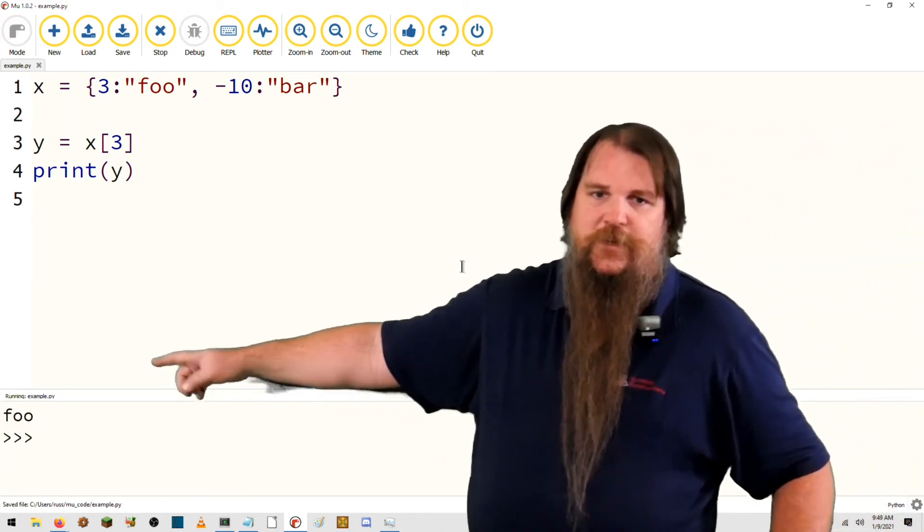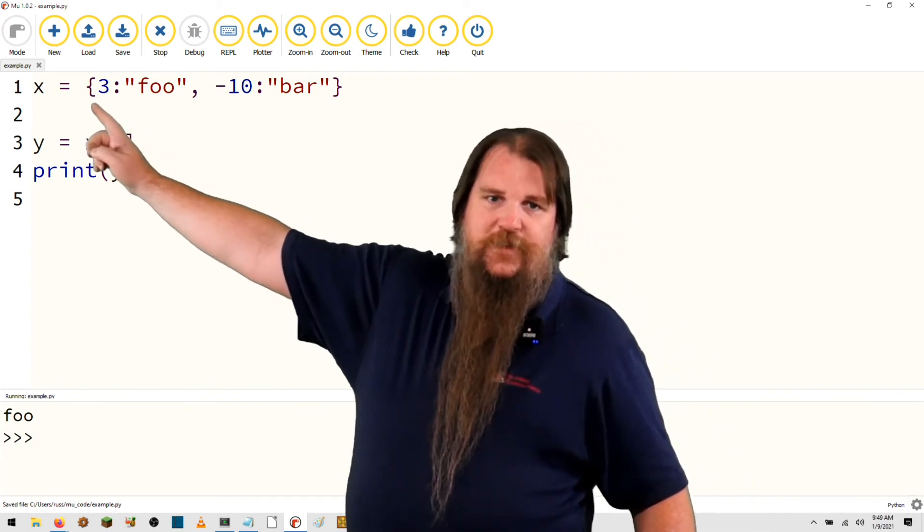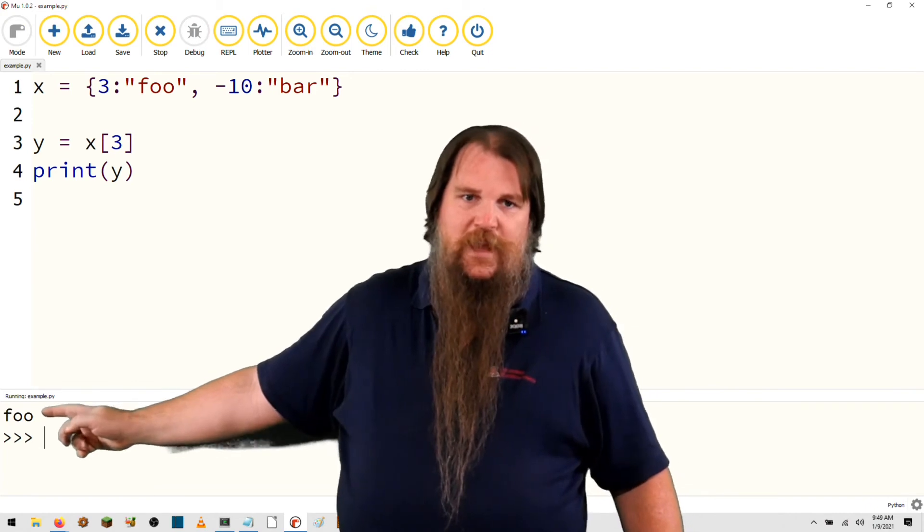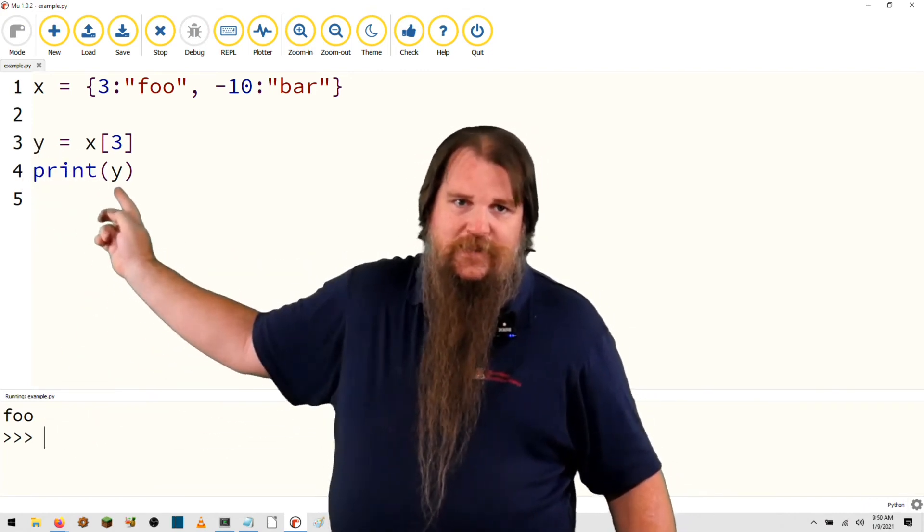It prints foo, because when you go to x[3], what it does is it looks for the key 3, finds the value foo, and it set that into y, and then printed it out.